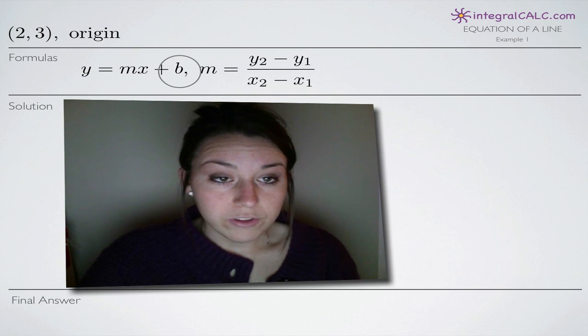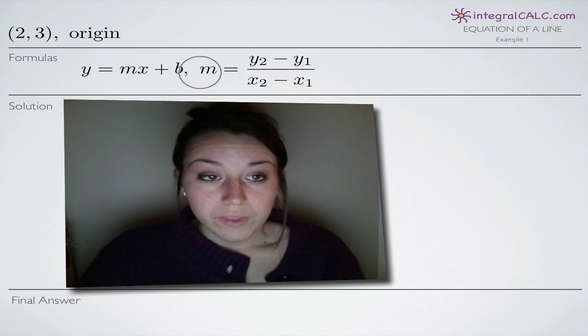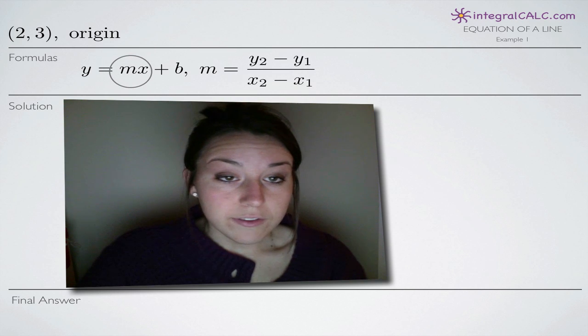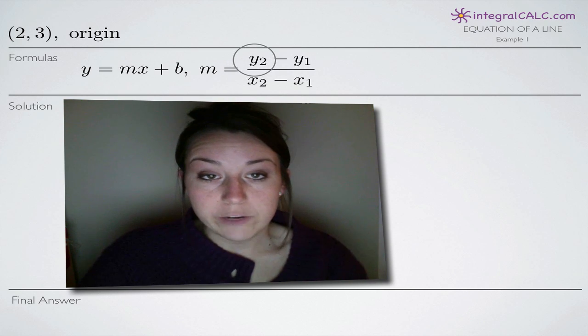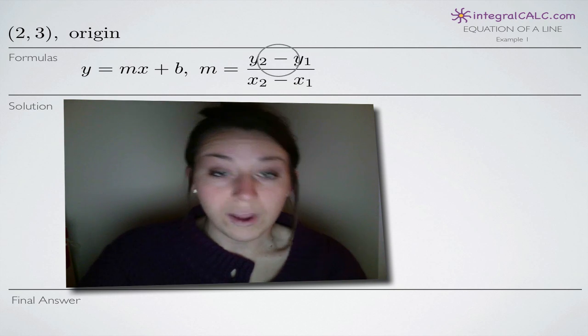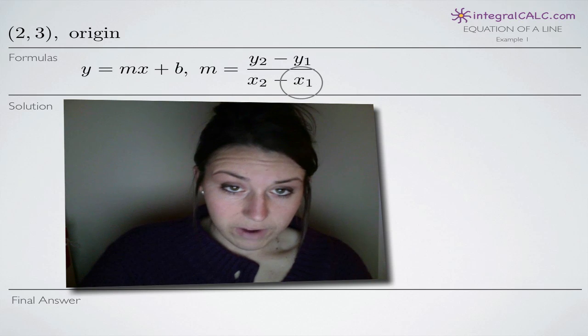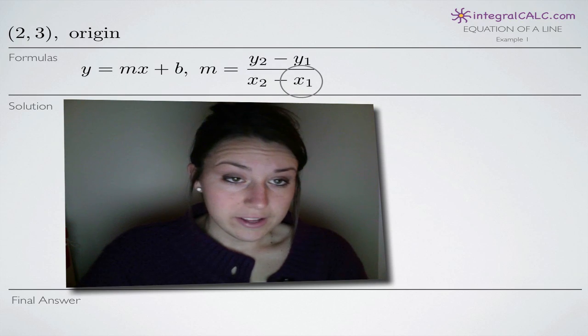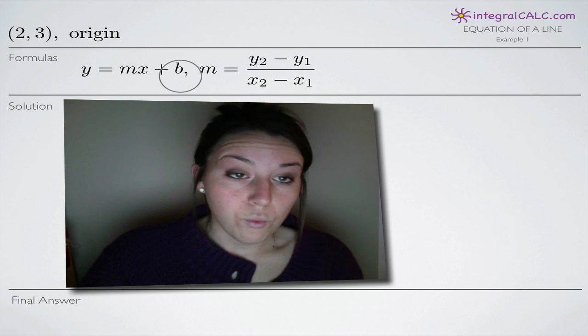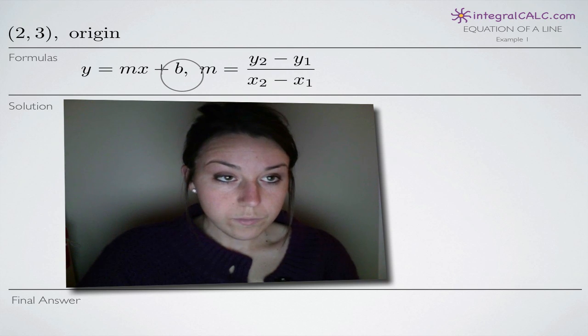Remember that this is slope-intercept form: y equals mx plus b, and that m is the slope, which we find by subtracting y1 from y2 and dividing that by x2 minus x1. Remember that b is the y-intercept of our line.